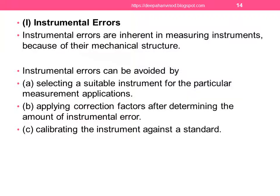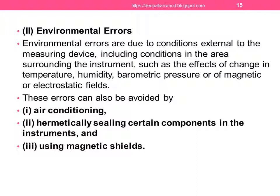The first one, instrumental error. Instrumental errors are inherent in measuring instruments because of their mechanical structure. It can be avoided. The steps to avoid this error are: selecting a suitable instrument for the particular measurement application, applying correction factors and determining the amount of instrumental error, and calibrating the instrument against a standard. By using these three methods we can avoid the instrument error.